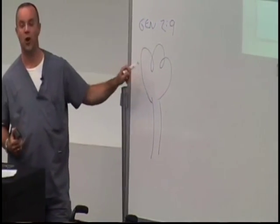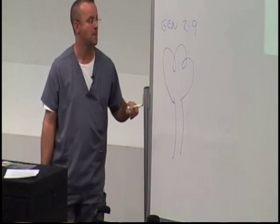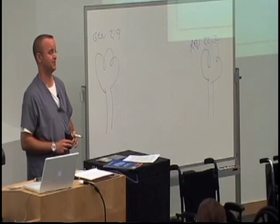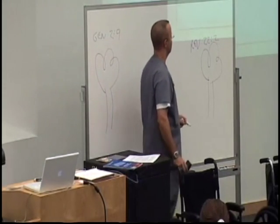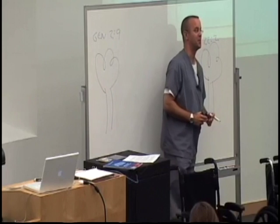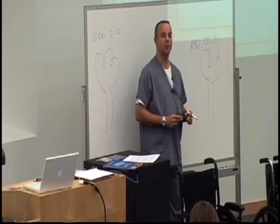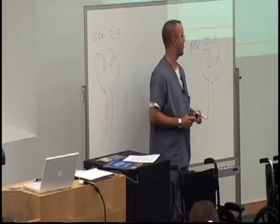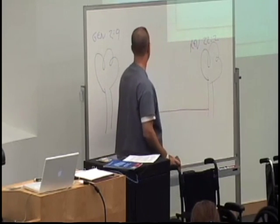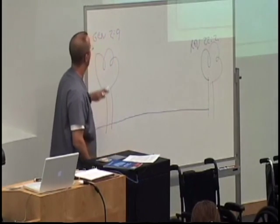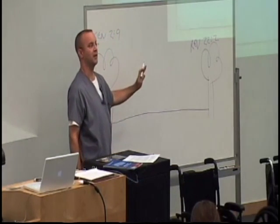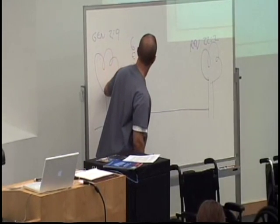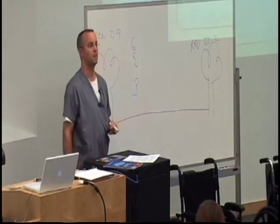In this garden — the Garden of Eden — disability is an abnormality because it doesn't exist. In this location, the eternal kingdom, disability once again is an abnormality. Why? It doesn't exist. But when does disability become a normality between the trees? With the fall.